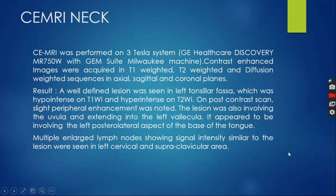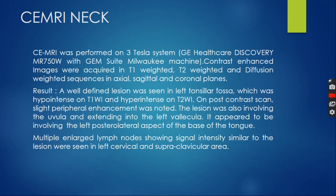Contrast MRI was also performed on a 3 Tesla system. Contrast enhanced images were acquired in T1-weighted, T2-weighted and diffusion-weighted sequences in axial, sagittal and coronal planes. A well-defined lesion was seen in the left tonsillar fossa which was hypointense on T1-weighted and hypointense on T2-weighted imaging. On post-contrast scan, slight peripheral enhancement was noted. The lesion was also involving the uvula and extending into the left follicle. It appeared to be involving the left posterior aspect of the base of tongue. Multiple enlarged lymph nodes showing signal intensity similar to the lesion were seen in the left cervical and supraclavicular area.